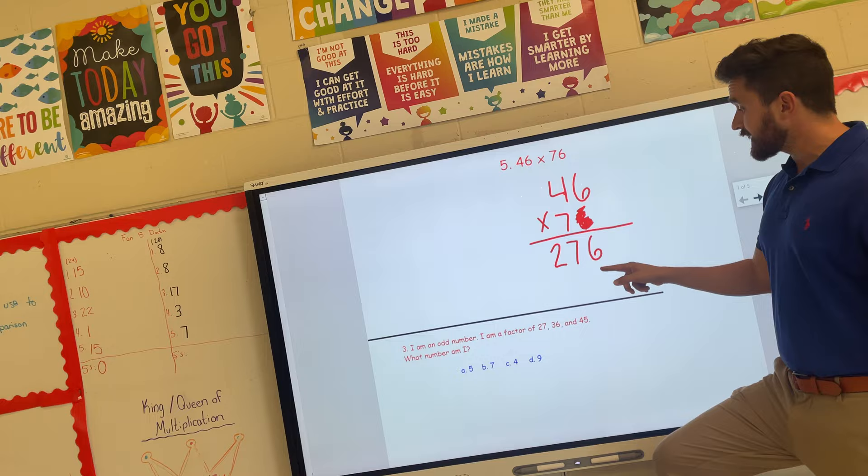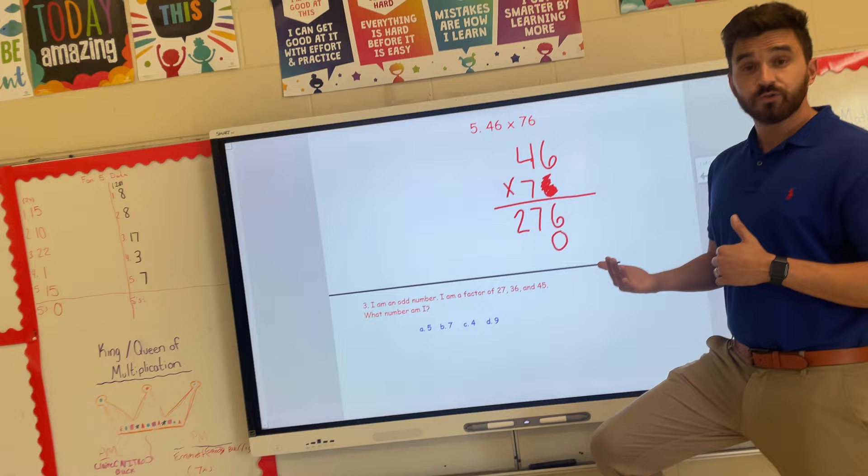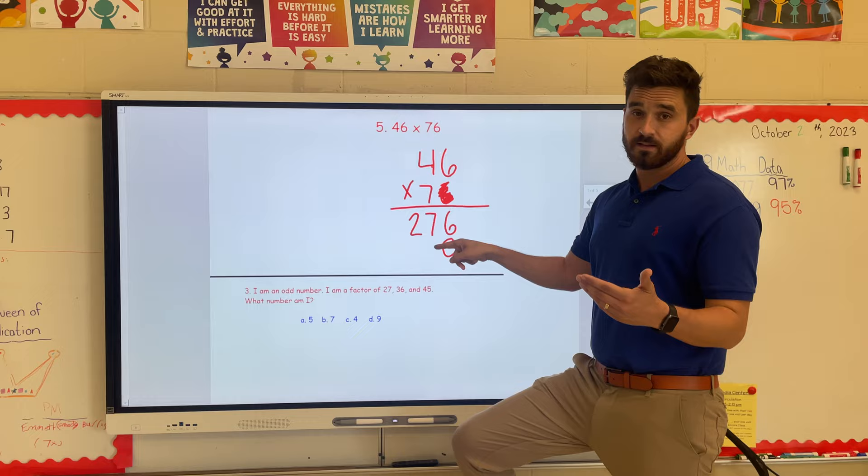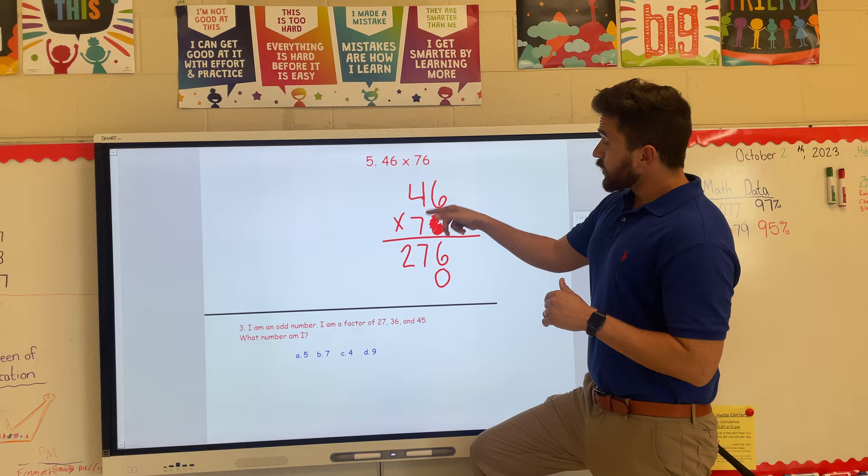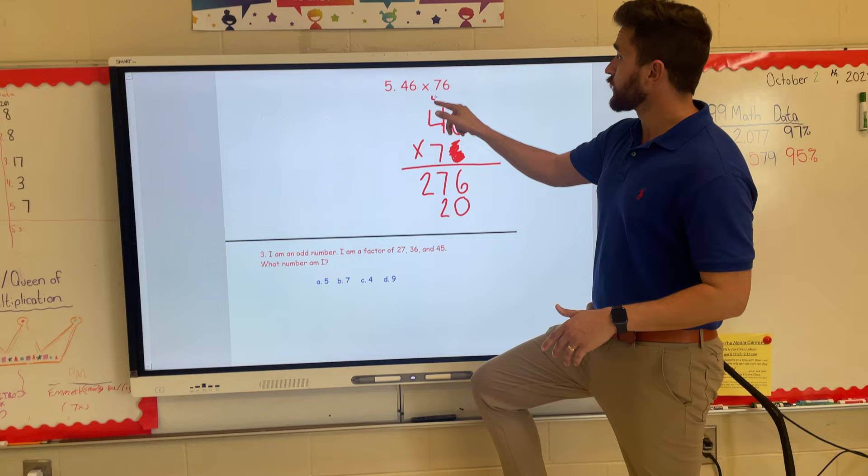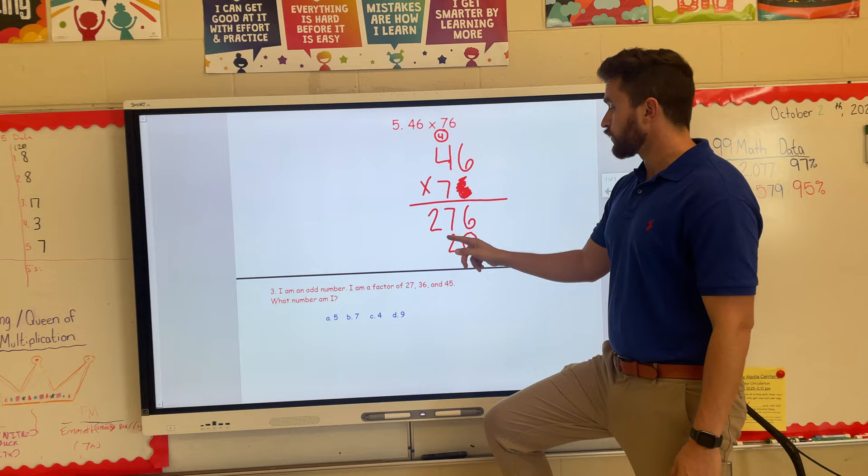This is where everybody gets tripped up. Before I start multiplying by the tens place though, I'm going to come down to this second line and I'm going to put this zero. We call that a placeholder. Main reason we're doing that—if I'm multiplying by the tens place, the first number I'm going to put down here is going to be in the tens place, so we can't forget that placeholder. If we forget that, it throws the whole thing off. Then I'm going to go in the same order. I'm going to go seven times six, give me 42. Two stays, four goes. Go up here to the tens—seven times four is 28, plus four is 32.